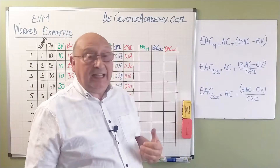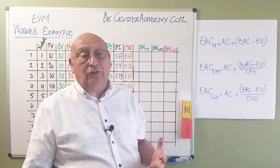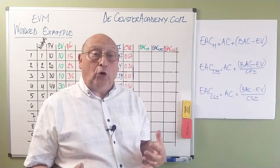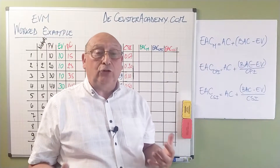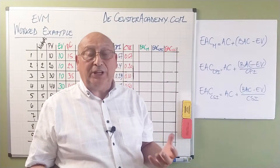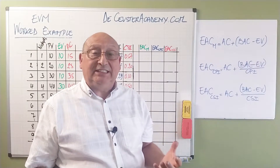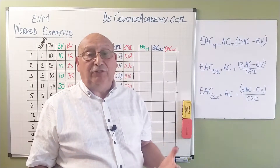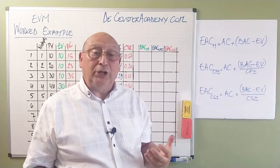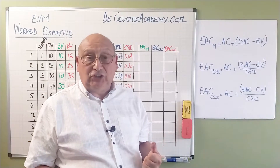The second formula is the estimate at completion taking into account the CPI. It means that we are going to assume that the remaining value we will create is done at the same efficiency as before, so we're using the CPI as the efficiency factor.